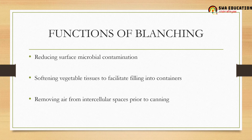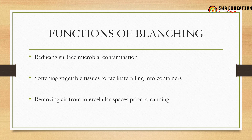The functions of blanching are: first, it reduces surface microbial contamination — when we pluck fruits or vegetables from trees or plants there are many chances for contamination, so blanching reduces this. Second, vegetable tissues are softened to facilitate filling into containers, and softening of vegetables is very important — this can be done using blanching.